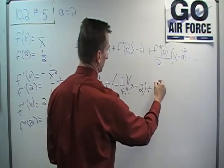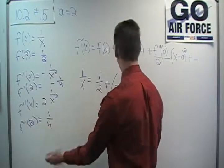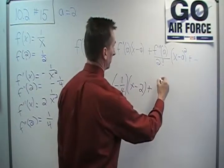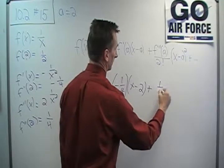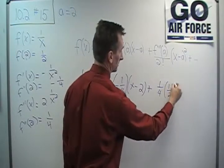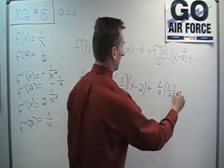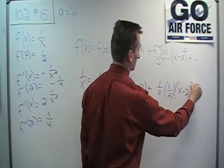Plus the second derivative evaluated at a, and we calculated that to be 1 fourth. So I've got 1 fourth, and now I'm going to be dividing it by 2 factorial, which is of course 2, and multiplied by x minus 2 squared.